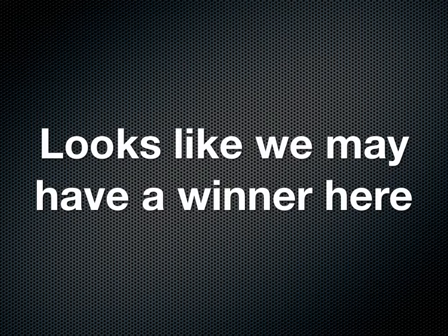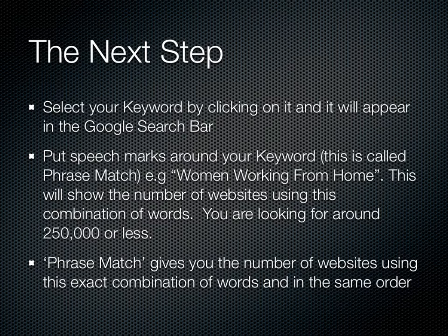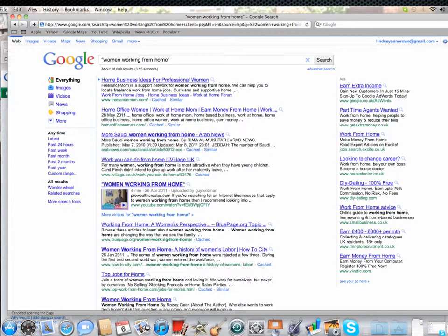That looks like we may have a winner, but let's not get too excited just yet. The next step: select that keyword by clicking on it and it will appear in the Google search bar. Now, if you put speech marks around your keyword — this is what we call phrase match — for example 'women working from home' with speech marks around it. When you click enter, this will show the number of websites using this combination of words in the same order. Ideally you're looking for anything preferably under 250,000 — the lower the better. I've put the speech marks around 'women working from home' in the Google search bar and the number underneath says about 18,000 results.